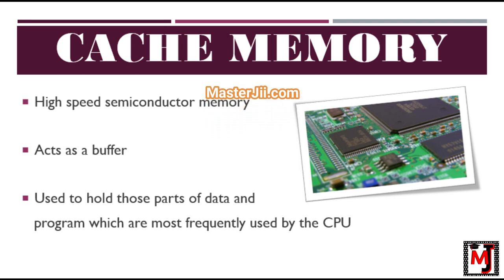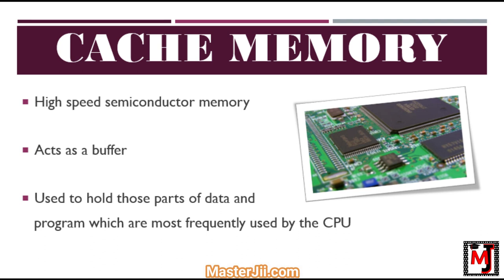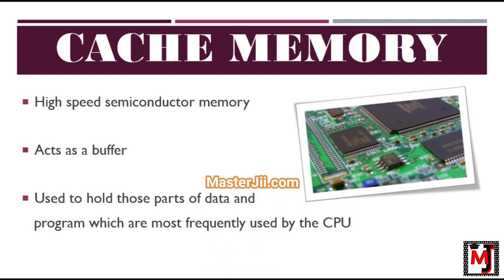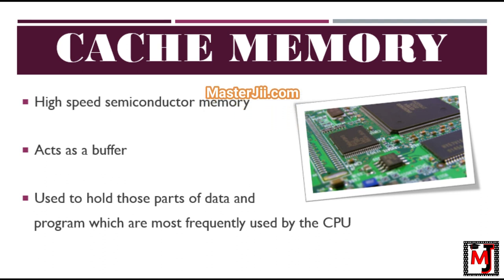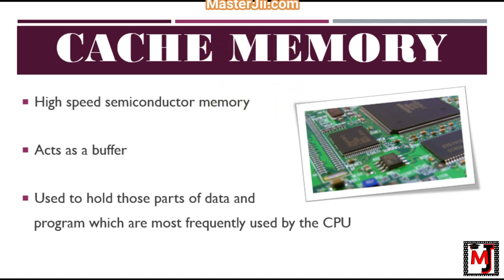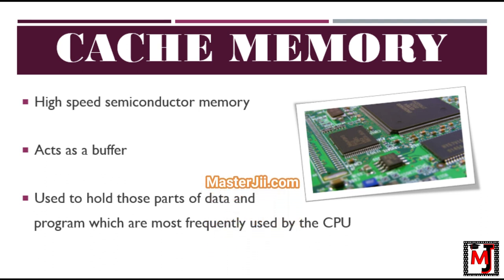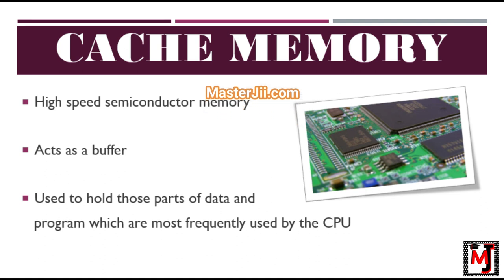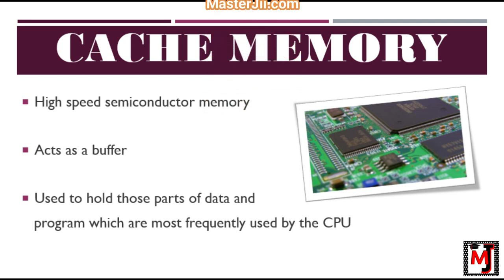Cache memory is a very high speed semiconductor memory which can speed up the CPU. It acts as a buffer between the CPU and the main memory. It is used to hold those parts of data and programs which are most frequently used by the CPU. The parts of data and programs are transferred from the disk to cache memory by the operating system.